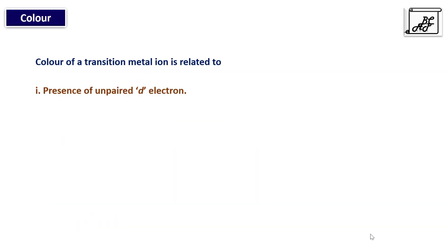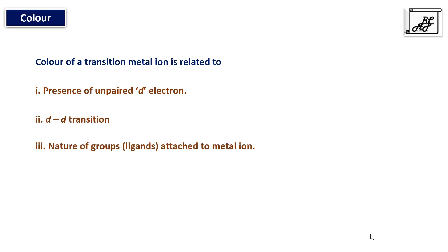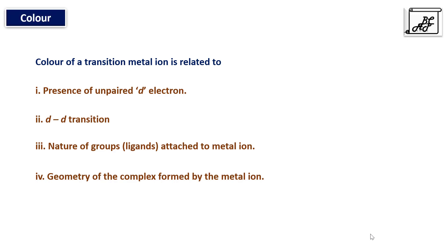In summary, the color of transition elements is related to: first, the presence of unpaired d-orbital electrons; second, d-d transition; third, the nature of the ligands associated with the central metal atom — whether they are strong or weak ligands; and fourth, the geometry of the complex — whether it is tetrahedral, octahedral, or square planar. In the next video, we will learn about the magnetic properties of transition elements and how to calculate the magnetic moment.